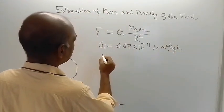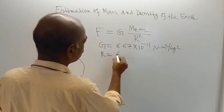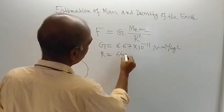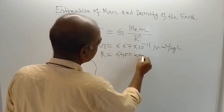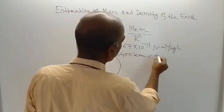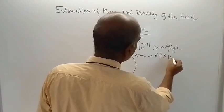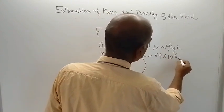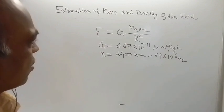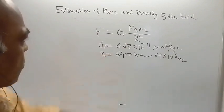And R, the radius of Earth, is equal to 6400 kilometers, which is equal to 6.4 into 10 to the power 6 meters. This is the value of R.